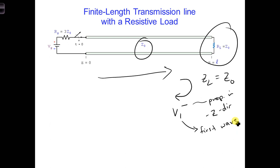If you want a hint, here's a hint. Ohm's law requires that the total voltage at the resistive load at Z equals L, the length of the end of the line, is related to the total current at the resistive load as follows.